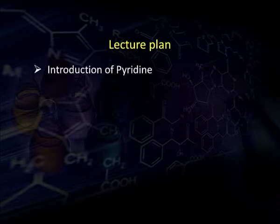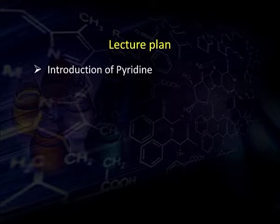Hello viewers, welcome to the fifth episode of heterocyclic compounds. So far we have studied about monocyclic 5-membered heterocyclic compounds pyrrole, furan and thiophene. In this episode we will study about the 6-membered monocyclic heterocyclic compound, that is pyridine.